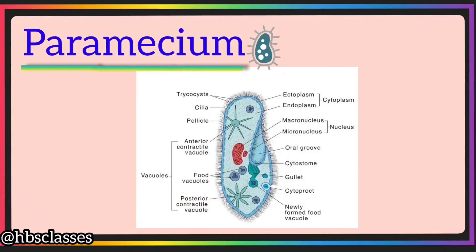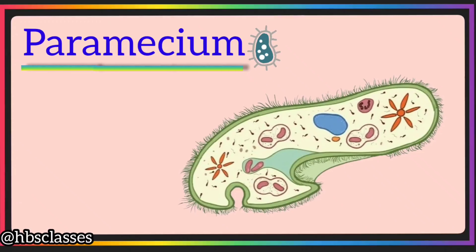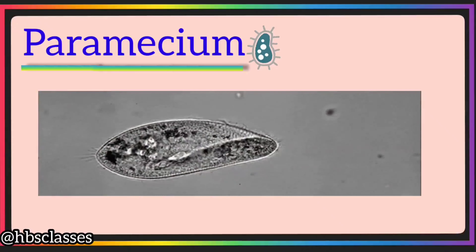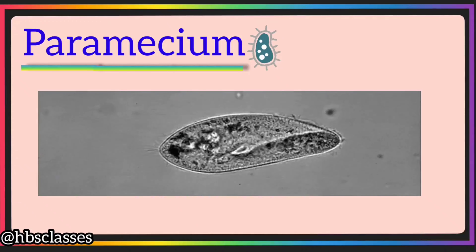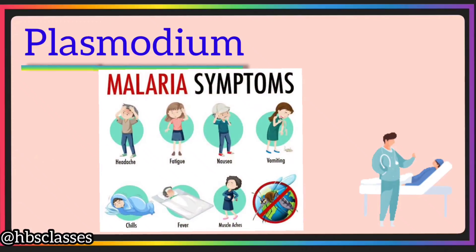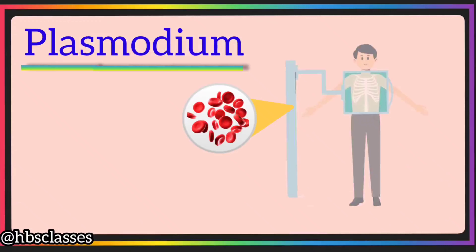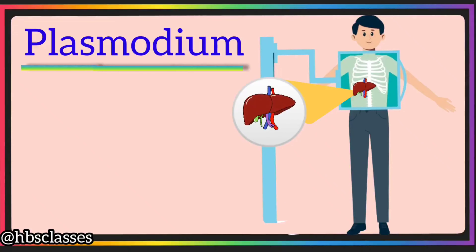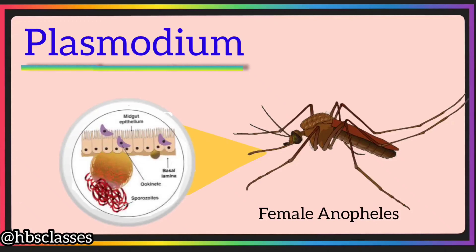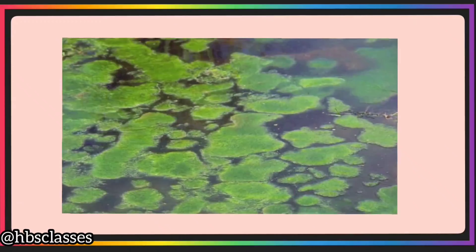Paramecium is a slipper-shaped freshwater protozoa. Its body is covered by structures called cilia, which help in locomotion and catching prey. Plasmodium causes malaria in human beings. It lives as a parasite in two hosts: in the red blood cells and liver of humans, and in the saliva and stomach of the female Anopheles mosquito.